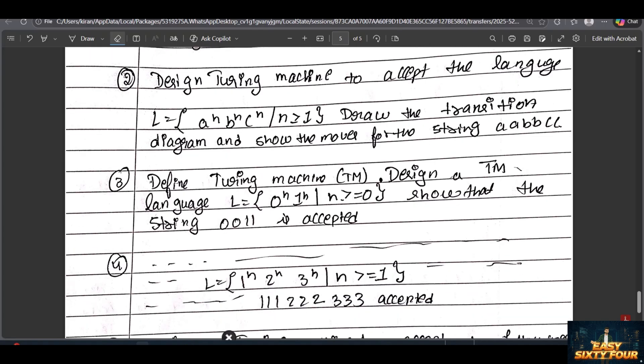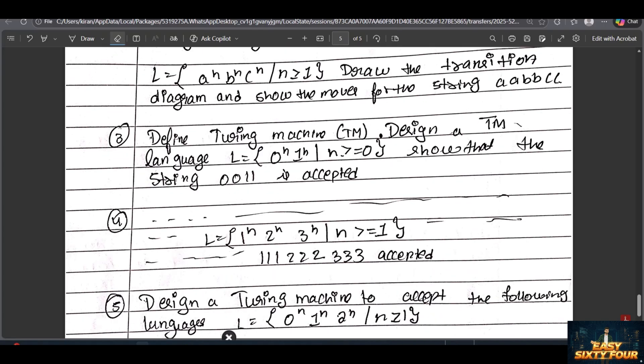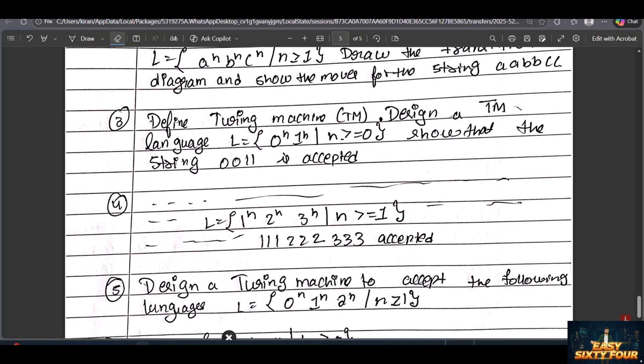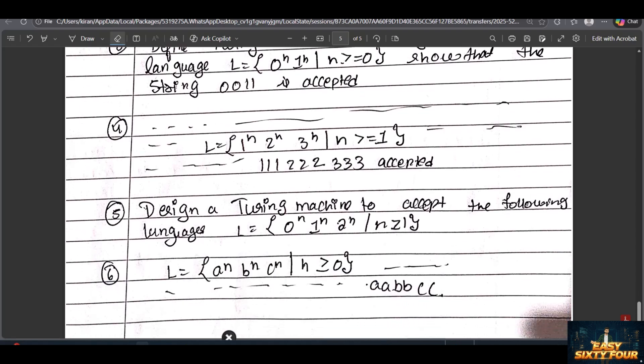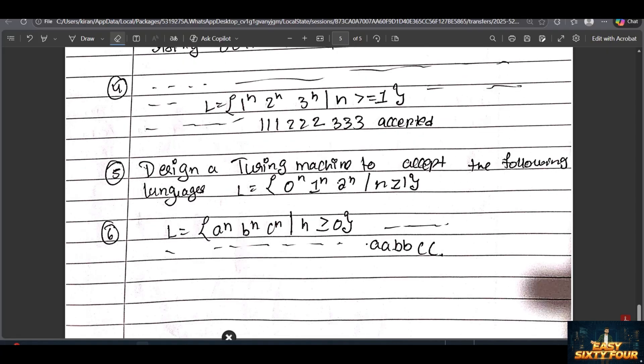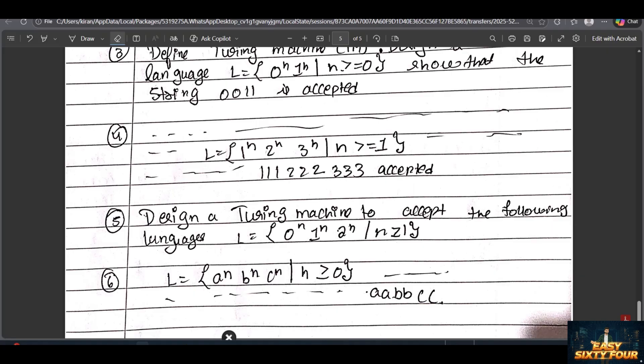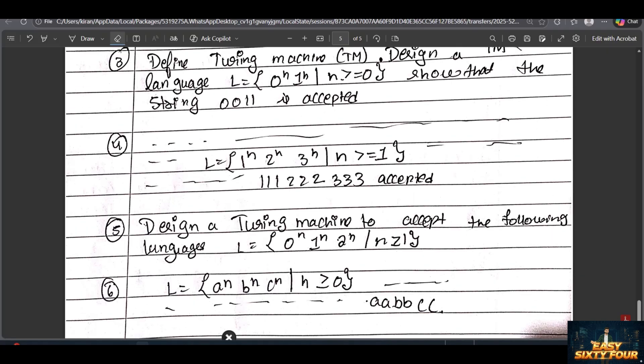I left some blank because the same question is there - the equation is different but the question is all the same. Design the Turing machine to accept - these two questions may come, I think. But also just practice it because in makeup exams these questions are asked.